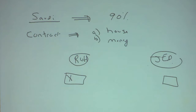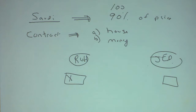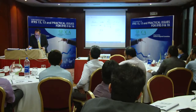The government would give you money for 90% of the price. So the idea was: if you can't sell the house to a Saudi citizen, you would sell it to the government for 90. But if you sold it to a Saudi citizen, you would sell it for 100. In other words, let's say the total profit margin was 15%.